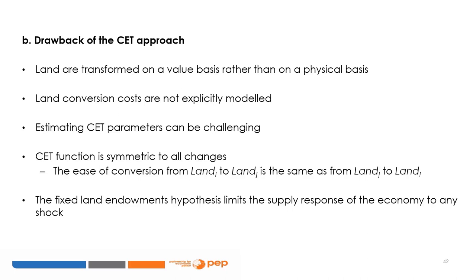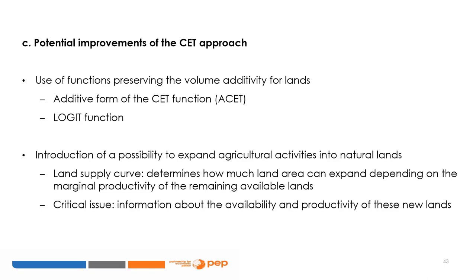Finally, the hypothesis of a fixed total land for all agricultural sectors limits the supply response of the economy to any shock. In this context, some improvements are sometimes considered in land-focused CGE studies. One improvement is to use specific functions for allocating land that preserve volume additivity on a physical basis — for example, the additive form of the CET function or the logit function. Another improvement is to introduce the possibility of expanding economic activities into natural land not previously used as agricultural land — for instance, by introducing a land supply curve that determines how much land area can expand for a change in total land value, depending on the marginal productivity of the remaining available land. However, a critical issue in modeling such supply of land is the information about the availability of new lands and their productivity.